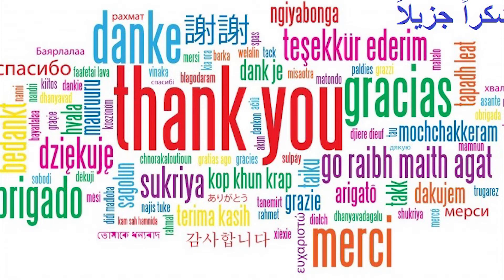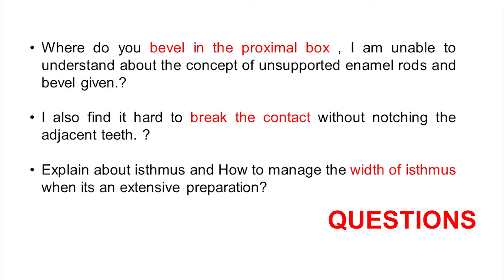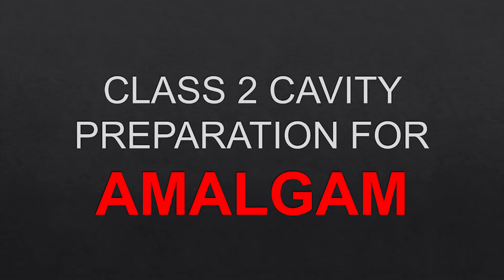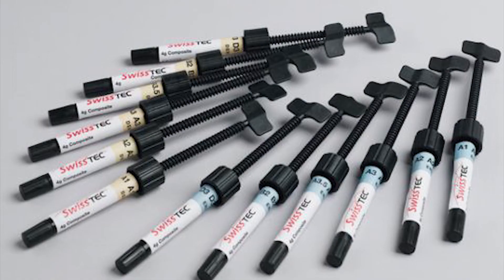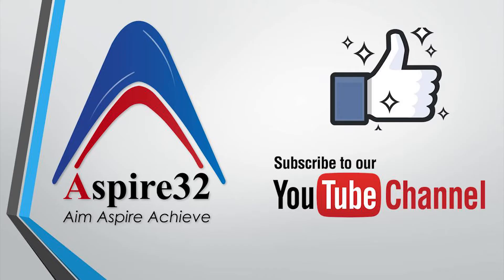Most students are confused regarding dimensions — that is, depth and height of the proximal box or the axial wall. There is also confusion regarding the isthmus and the contact. A few students asked about bevels. Please note that this video is based on the principles of class 2 cavity preparation for amalgam as a restorative material. Learning it with respect to amalgam is very important because most final exams in India or any other country are based on these same principles.